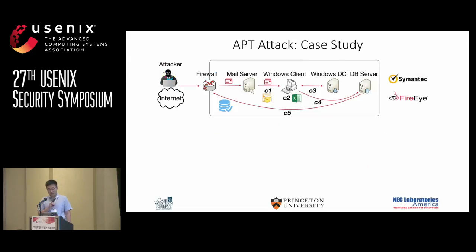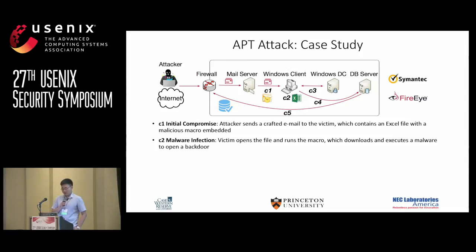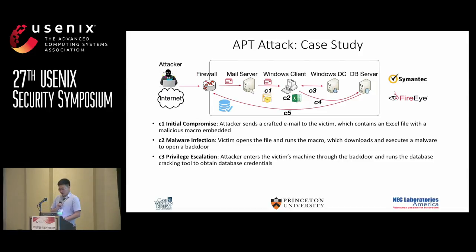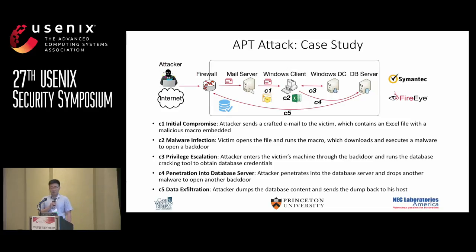Here is a typical setup for an APT attack. The goal is to steal data stored in the database server. The attack first conducts an initial compromise by sending a crafted email with a malicious macro embedded in an attachment. The victim opens the email, clicks the attachment, and runs the macro, which downloads and executes malware to create a backdoor. With the backdoor, the attacker penetrates into the internal host, obtains database credentials, penetrates the database server, drops another malware, and finally dumps the database content, sending it back through the backdoor. This completes the entire APT sequence.